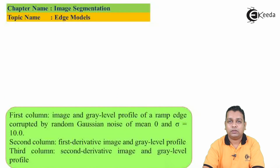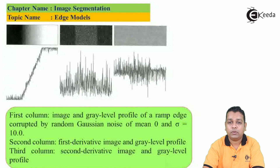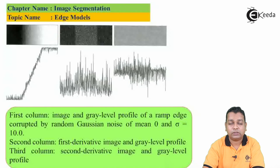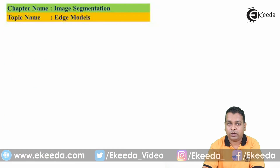The last figure in this sequence again has three columns. The first column shows the image and gray level profile of the ramp edge corrupted by random Gaussian noise with the same mean μ=0 but with σ=10.0, which is ten times larger. The second column represents the corresponding first derivative image and gray level profile, and the third column represents the second derivative image and gray level profile.